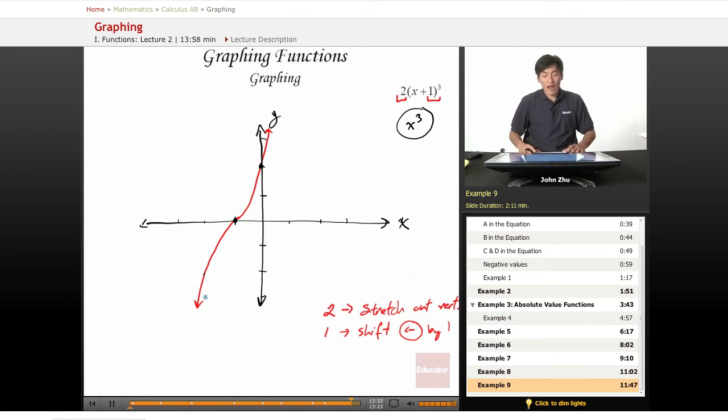So for graphing a function given the original function, we just follow these constant rules that we listed previously on the first page of our lesson. There's really no trick to it, just keep practicing and you will get used to manipulating graphs this way.